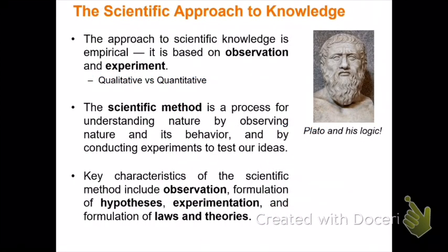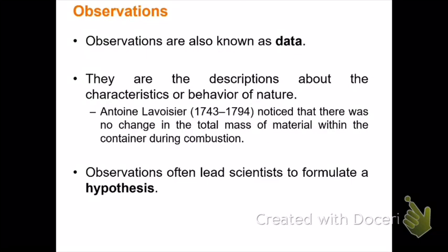Since chemistry is a branch of science, chemists and all other scientists follow the scientific method — a process for understanding nature by observing it and conducting experiments to test ideas. The scientific method involves making observations, formulating hypotheses, performing experiments, and formulating laws and theories. In science, an observation doesn't just mean looking at something; it can also mean making a measurement. Taking the mass of an object is a quantitative observation, while observing that the sky is blue is a qualitative observation.